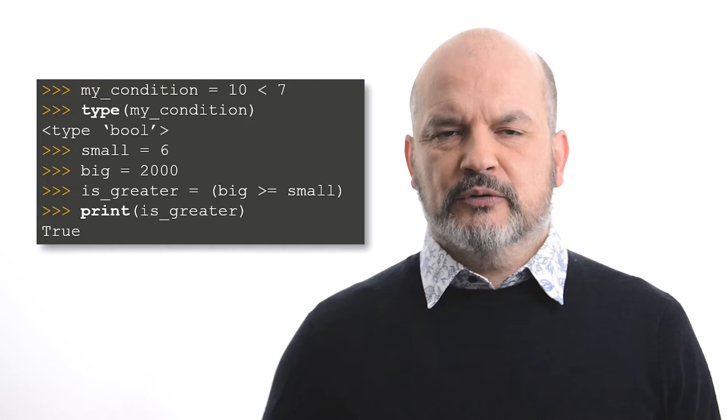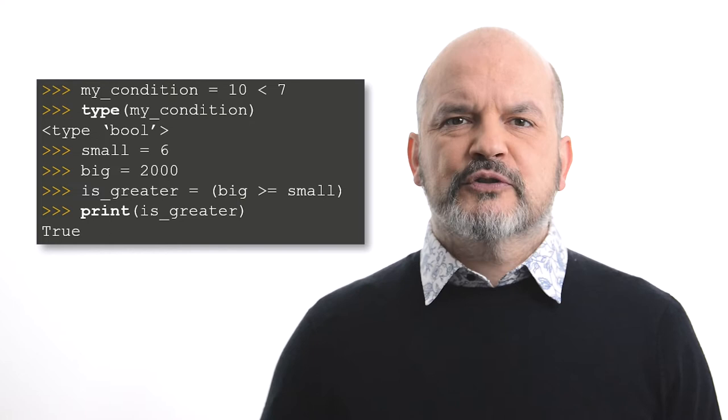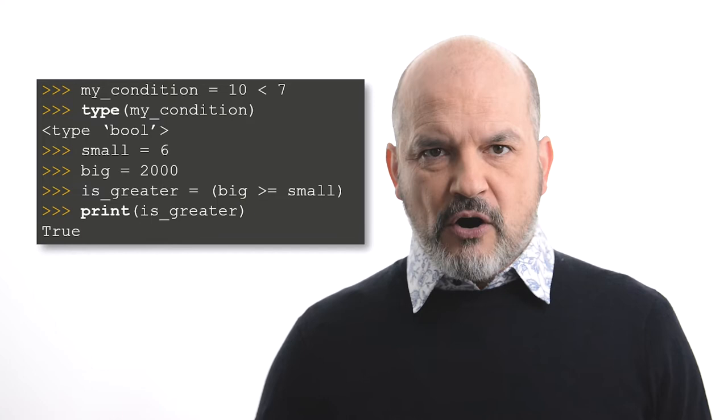Values and variables can be compared and the result can be stored in a variable too. The variable my_condition refers to the value of the expression 10 less than 7, which is false. Therefore, the type of the variable is a boolean.